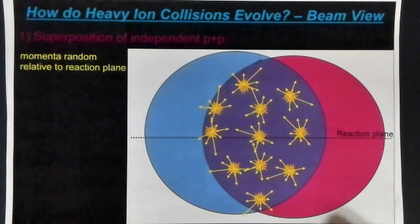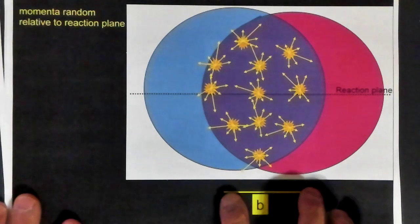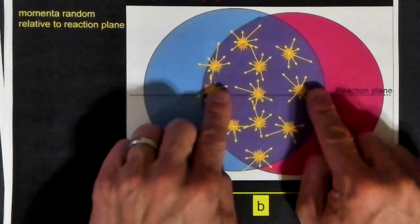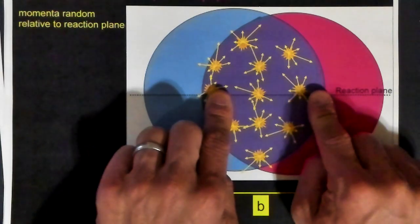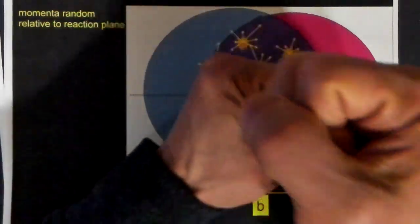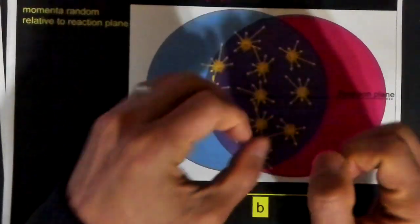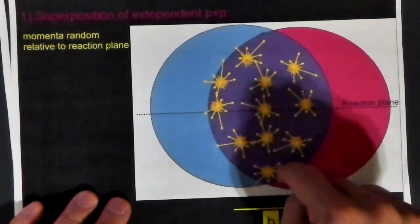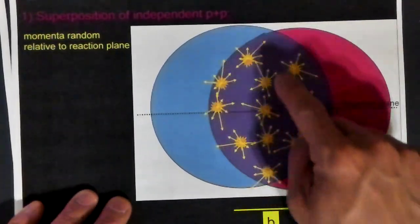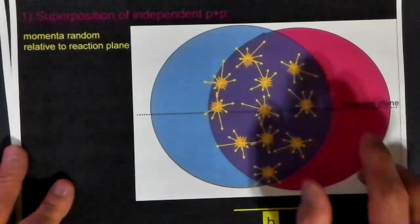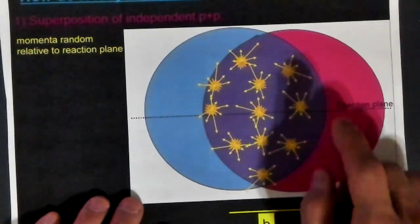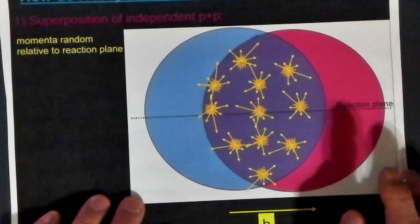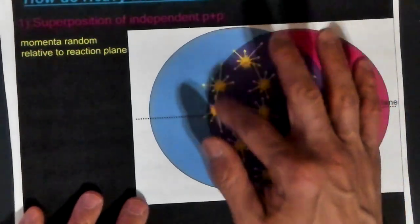There'll be something called the impact parameter, which is the separation between the centers of the two nuclei. If the impact parameter is not zero, if they're not completely overlapping, then you'll notice that the region where they collide will have this sort of almond shape to it. If you neglect the little cusps here, this looks sort of like an ellipse. We'll talk about the elliptical shape of the overlap region.